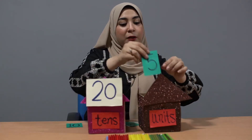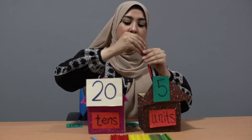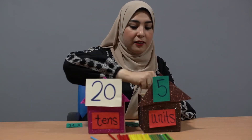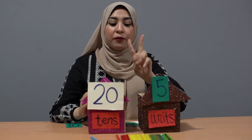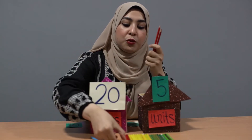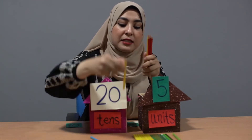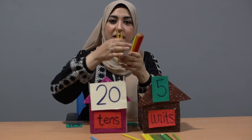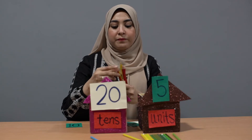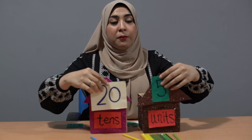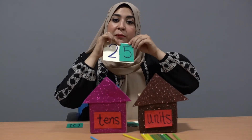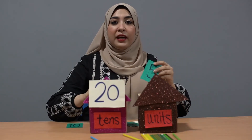So in the tens house, we have one group of tens. Now look at this number — here we have 20 and here we have five. Five in the units place means only five. Let's count together: one, two, three, four, five. And 20 in the tens place means two groups of ten. So in the tens place we have two groups of tens, and the number will be 25.